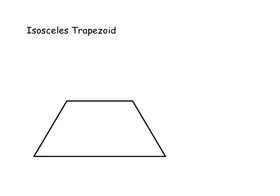A more specific type of trapezoid is the isosceles trapezoid. An isosceles trapezoid is a trapezoid with congruent legs — the legs being the non-parallel sides. To show that for the quadrilateral here, we'll indicate it's a trapezoid by marking the parallel sides, and then mark that the non-parallel sides, the legs, are congruent with tick marks. So if a trapezoid has congruent legs, it's considered to be an isosceles trapezoid.